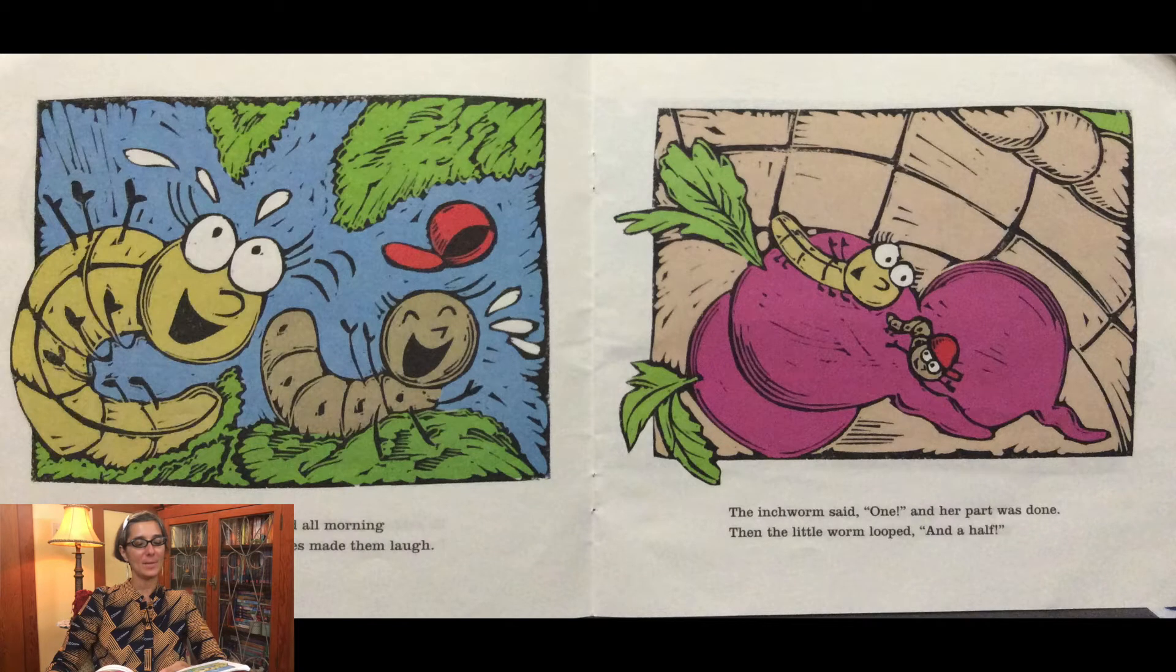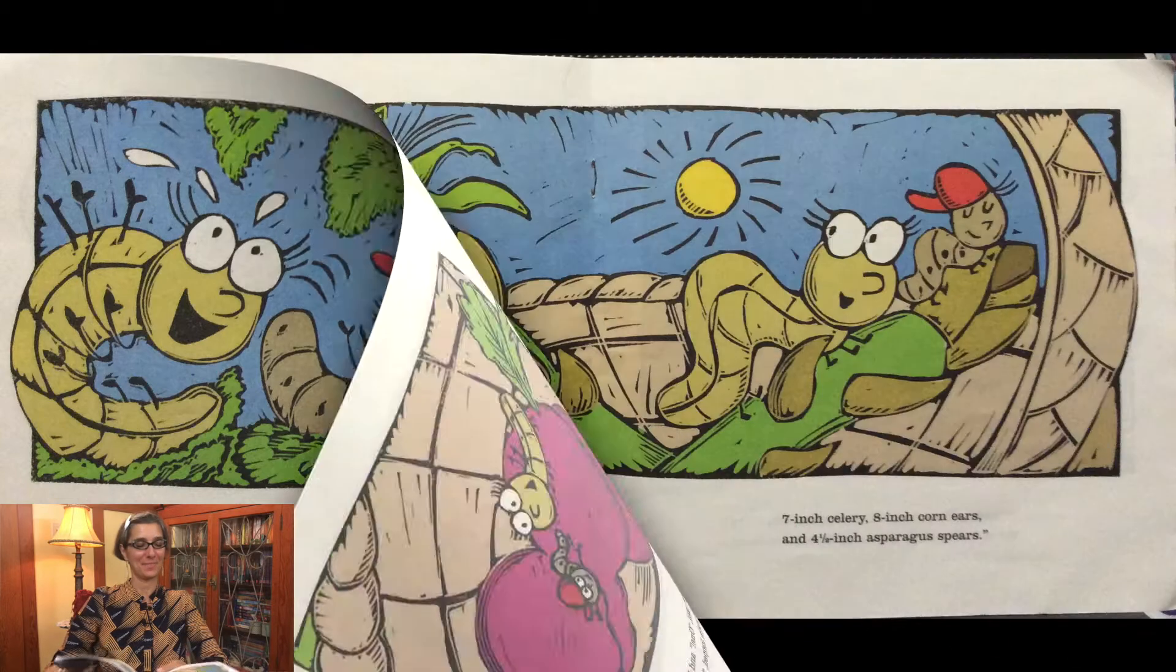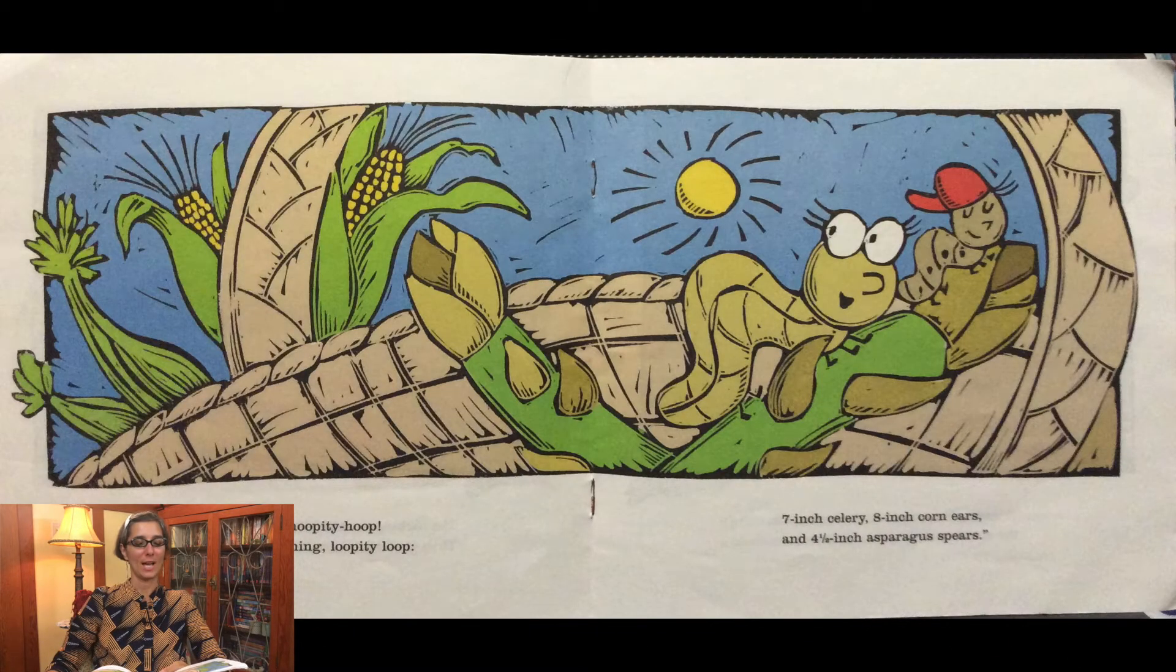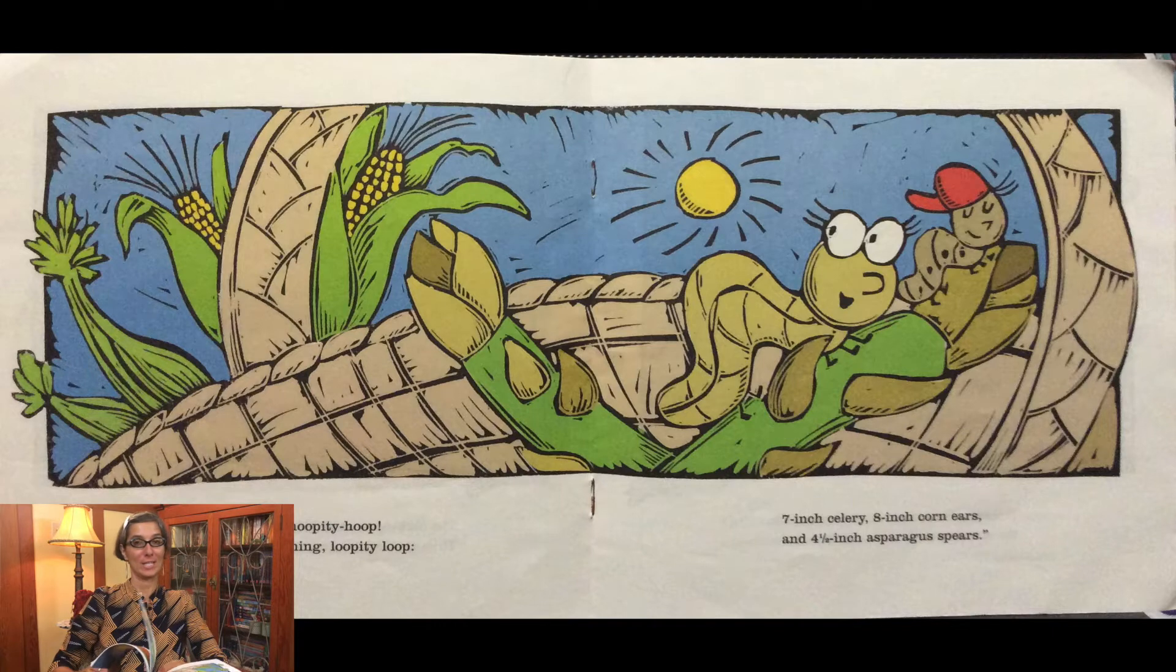They happily measured all morning while fuzzy green leaves made them laugh. The inchworm said one and her part was done. Then the little worm looped and a half. Squirmy wormy hoppity hoop. We measure everything loopity loop. Seven inch celery, eight inch corn ears, and four and a half inch asparagus spears.